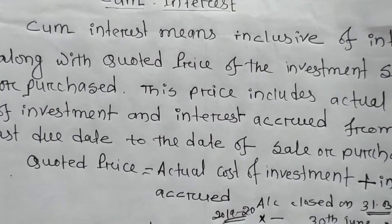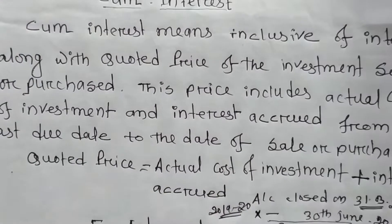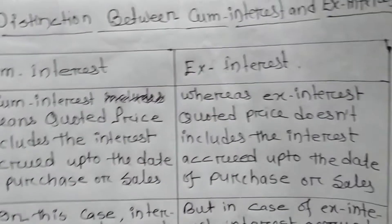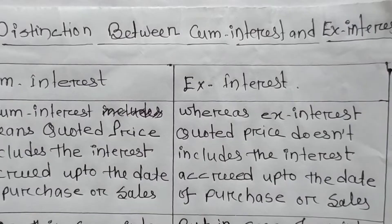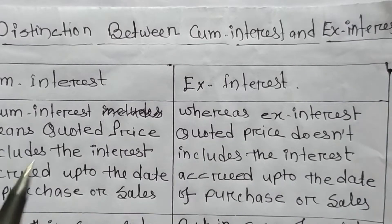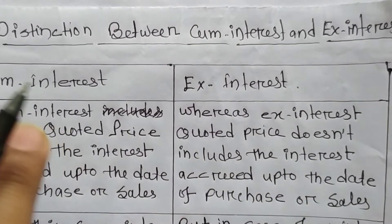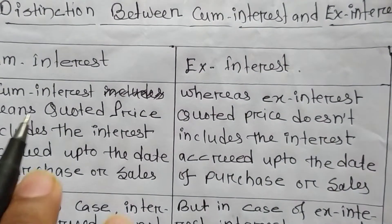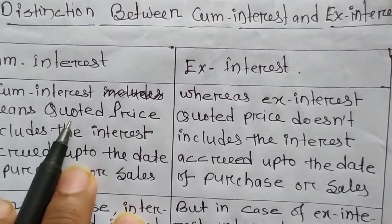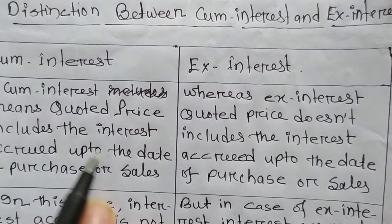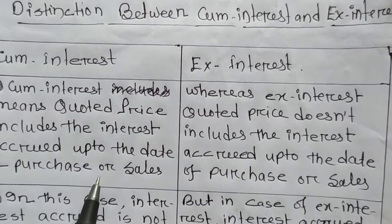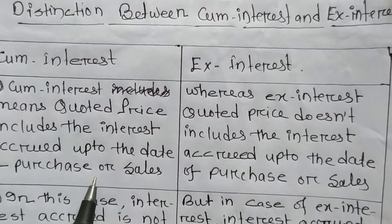Now let's look at the differences between cum interest and ex interest. I have made two columns — one is cum interest and the other is ex interest. Cum interest means the quoted price includes the interest accrued up to the date of purchase or sale.